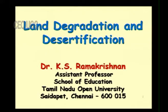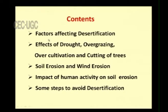The content we are going to discuss includes the factors affecting desertification, the effects of drought, over grazing, over cultivation and cutting of trees, soil erosion and wind erosion, the impact of human activity on soil erosion and some steps to avoid desertification. These are the major topics we are going to discuss today.